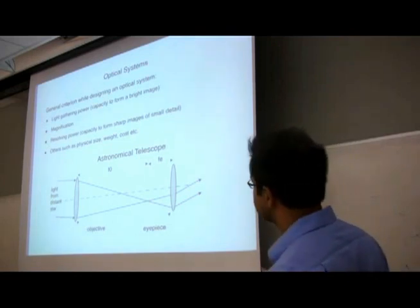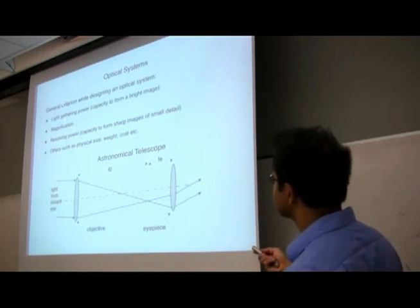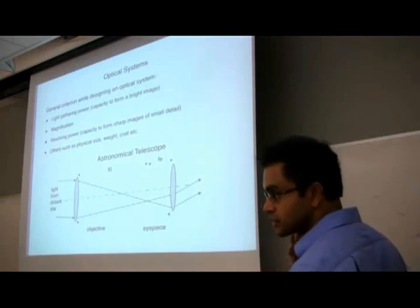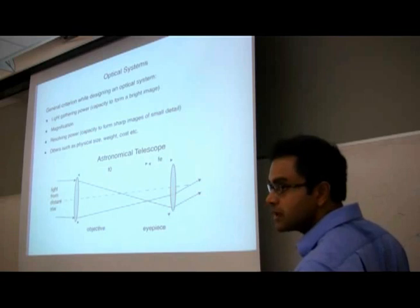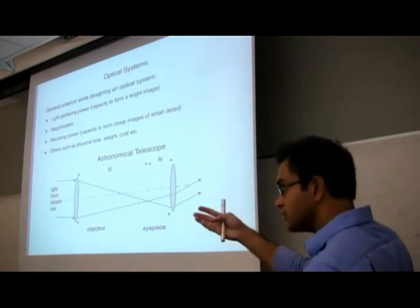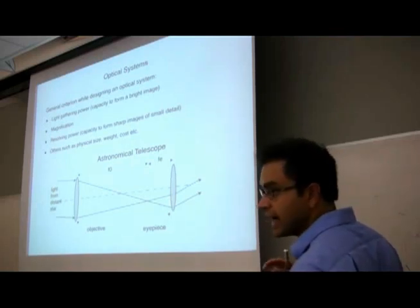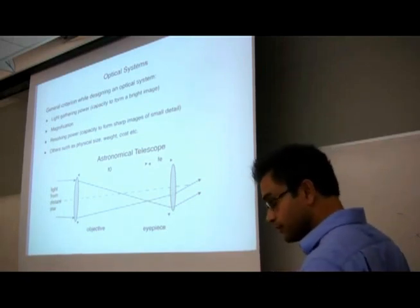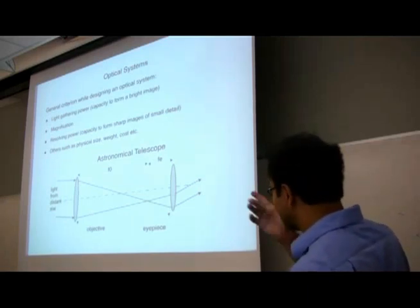When designing an optical system, we look for four things primarily: light-gathering power — especially important in astronomy where you're photon-limited; magnification — for microscopy or zoom lenses; resolving power — can you form sharp images with high detail; and finally cost, weight, and practical constraints. This is the overview of what you think about in optical engineering.